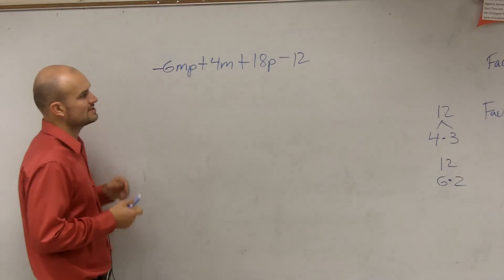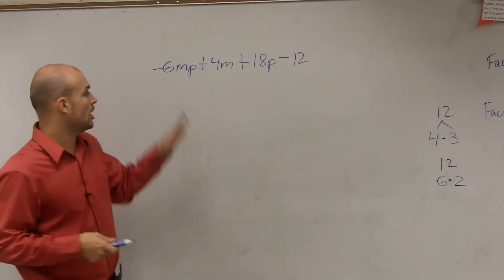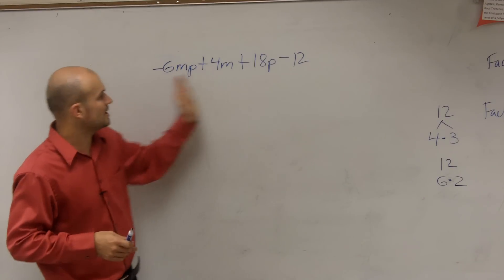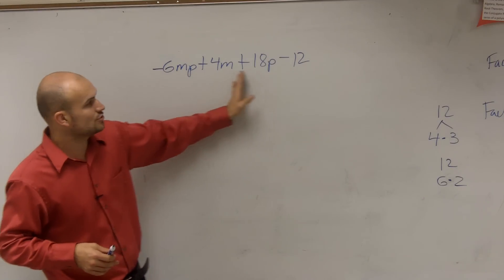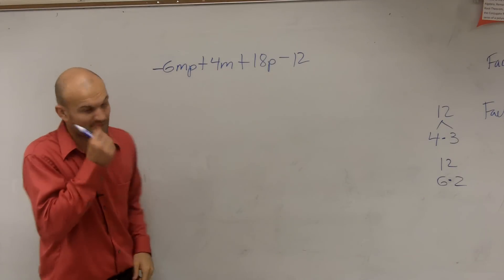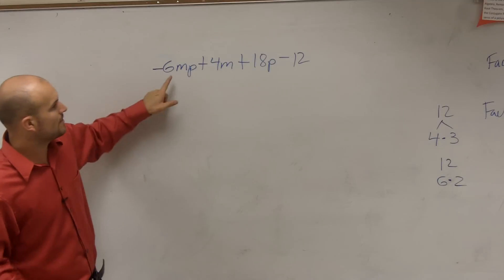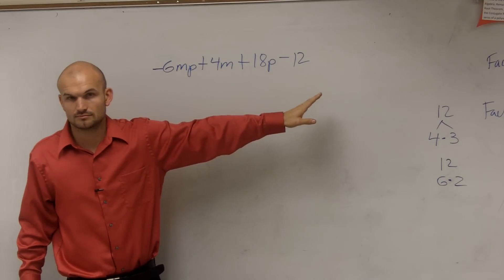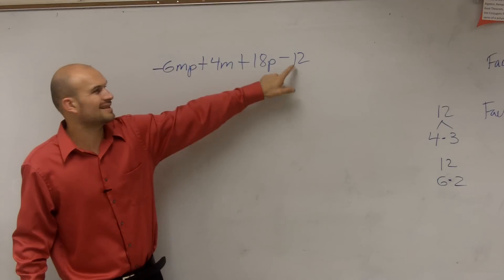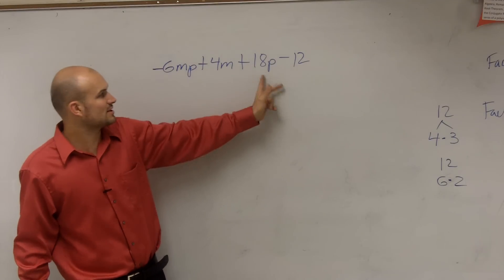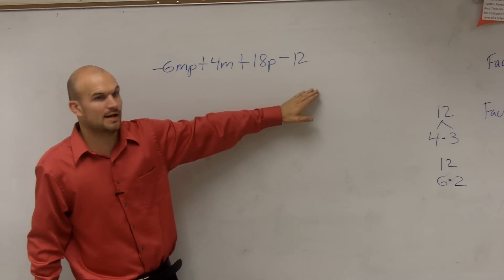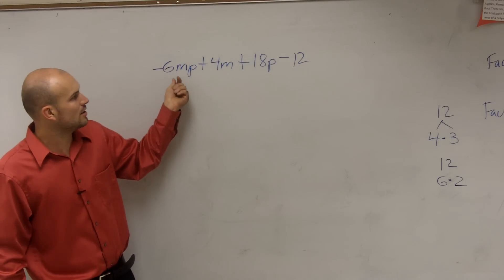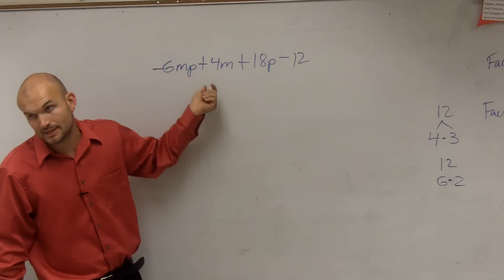What about numbers? What is it they all share? They all share a two — a two would be the largest number. What about our m's? No, this doesn't have an m, nor does this one, so we can't factor out an m. And then what about the p? No.